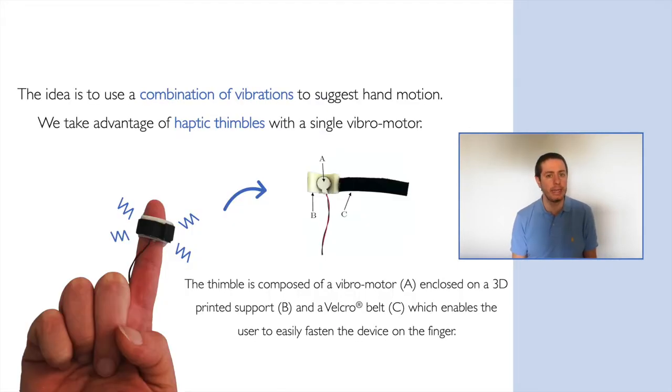We exploited tiny and easily wearable haptic thimbles like this one. Each thimble is composed of a vibromotor and enclosed in a 3D printed support. The advantage of wearing such a small device is that we do not have problems in tracking the hand with camera-based or similar approaches.